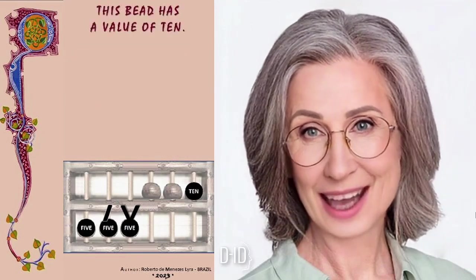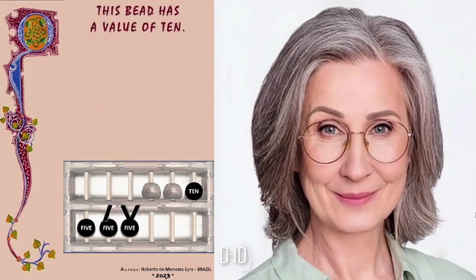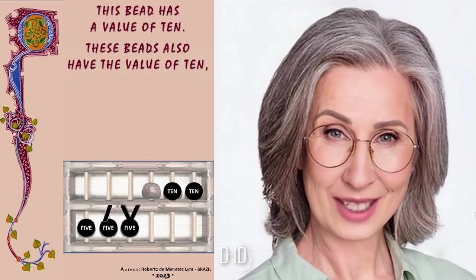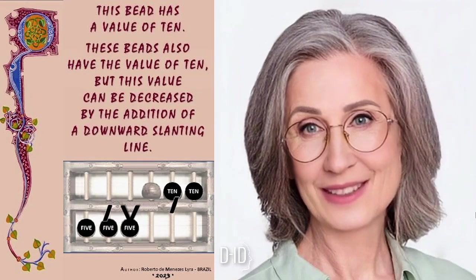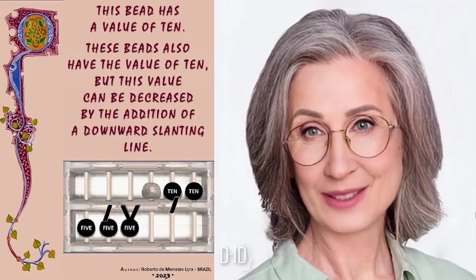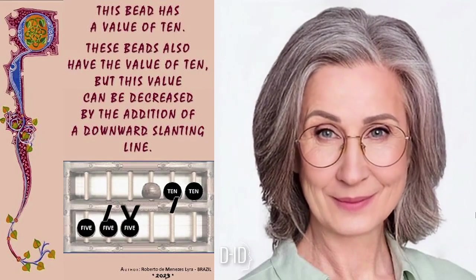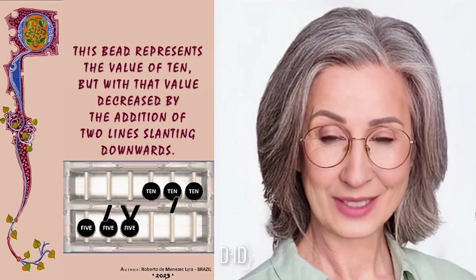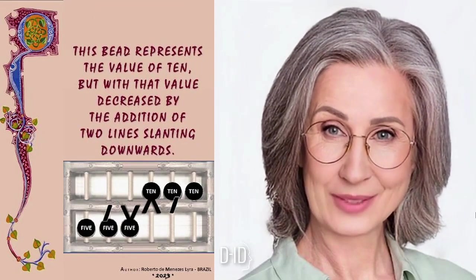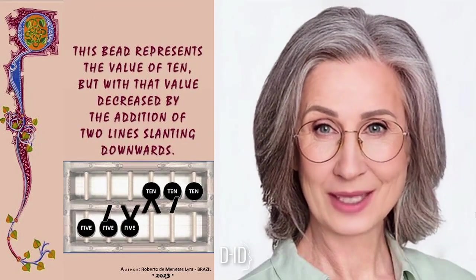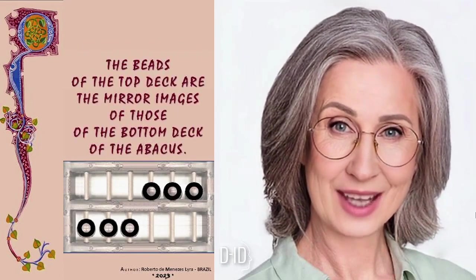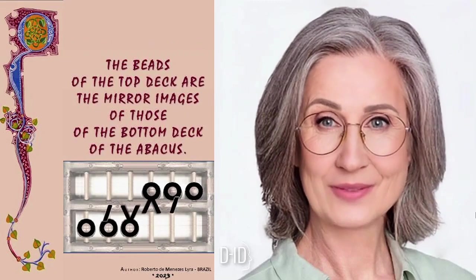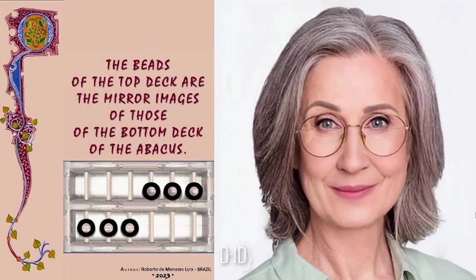This bead has a value of 10. These beads also have the value of 10, but this value can be decreased by the addition of a downward slanting line. This bead represents the value of 10, but with that value decreased by the addition of two lines slanting downwards. The beads of the top deck are the mirror images of those of the bottom deck of the abacus.